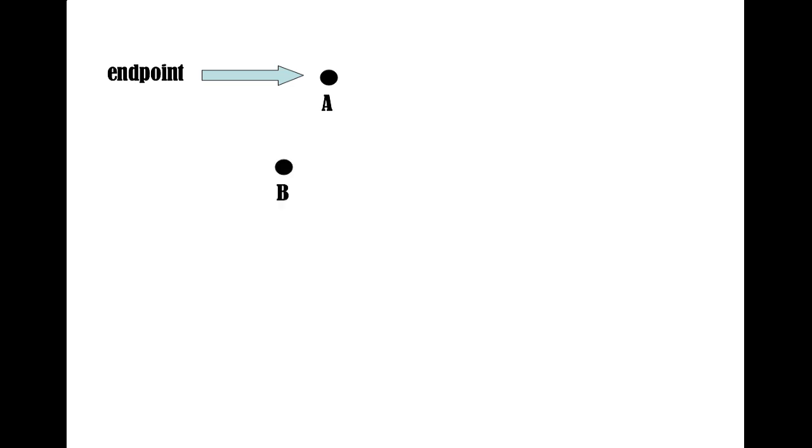If we take two endpoints, endpoint B and endpoint C, and we connect them, what we have just made is called a segment. To describe a segment, we take the two letter names of the endpoints and use the symbol for a segment, which looks like a straight line.